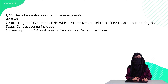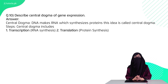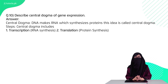Question 10 is: describe the central dogma of gene expression. The central dogma explains how the cell controls gene expression by making proteins. There are two important processes: transcription and translation.